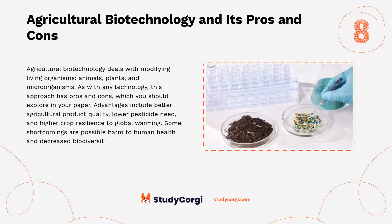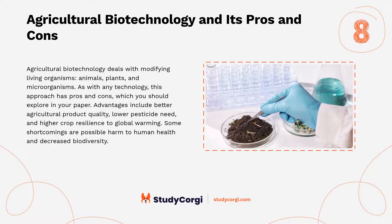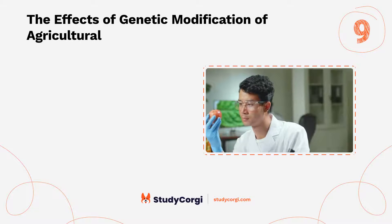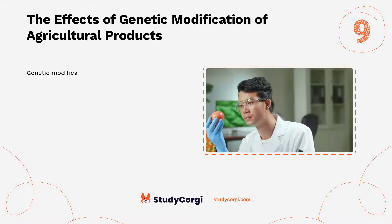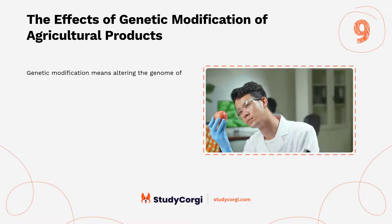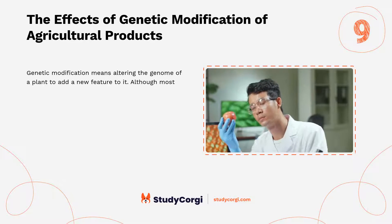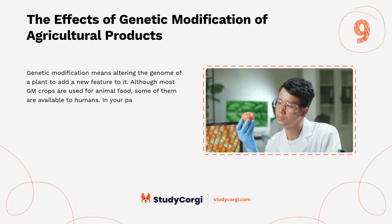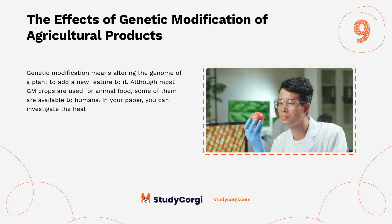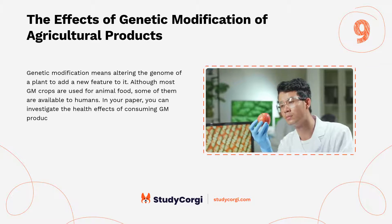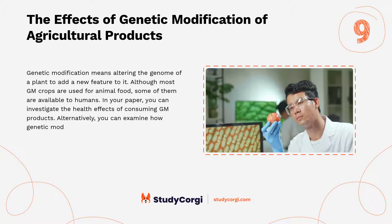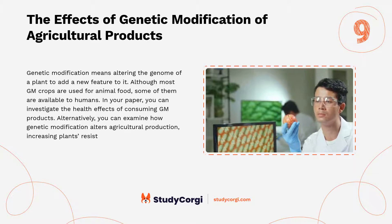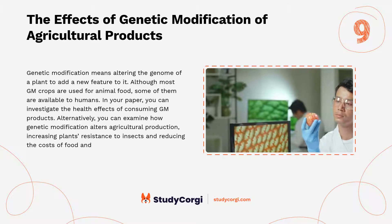The effects of genetic modification of agricultural products. Genetic modification means altering the genome of a plant to add a new feature to it. Although most GM crops are used for animal food, some are available to humans. In your paper, you can investigate the health effects of consuming GM products, or examine how genetic modification alters agricultural production by increasing plants' resistance to insects and reducing the costs of food and drug production.